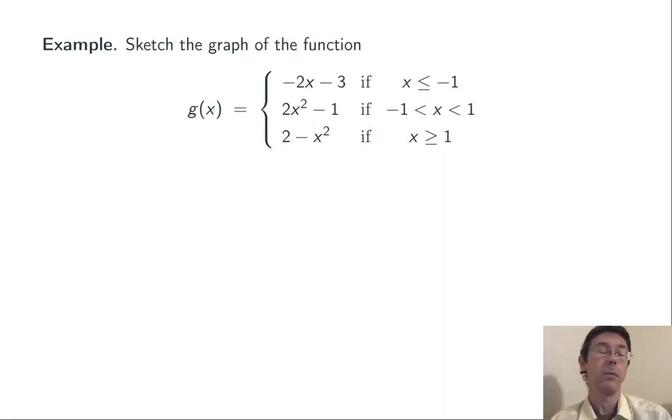One final example. Let's sketch the graph of g of x equals negative 2x minus 3 if x is less than or equal to negative 1, 2x squared minus 1 if negative 1 is less than x is less than 1, and 2 minus x squared if x is greater than or equal to 1. So this time we have to graph three separate functions on three separate intervals.